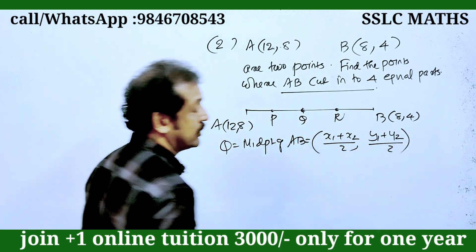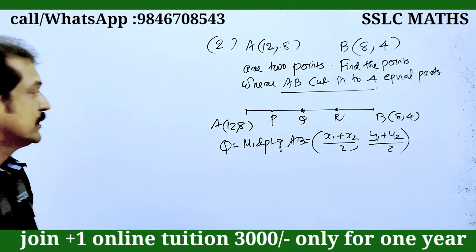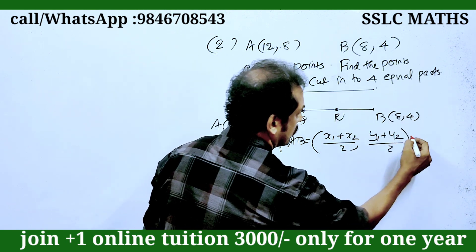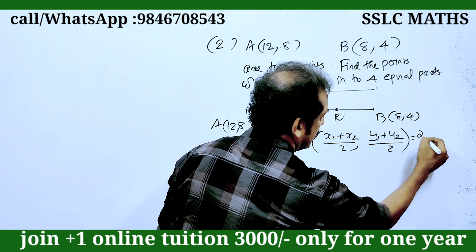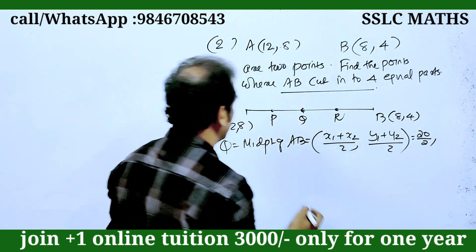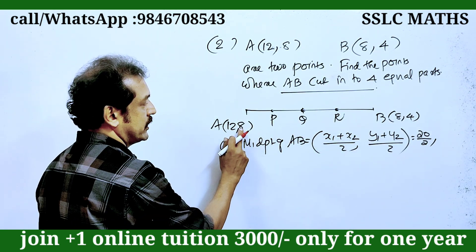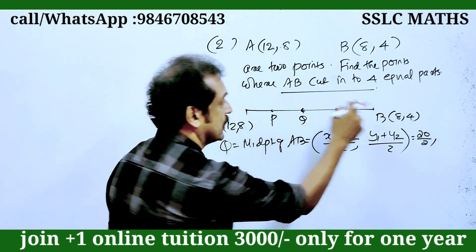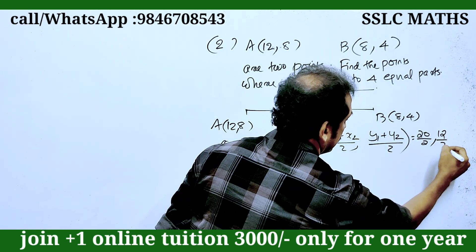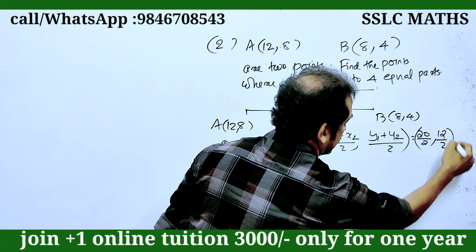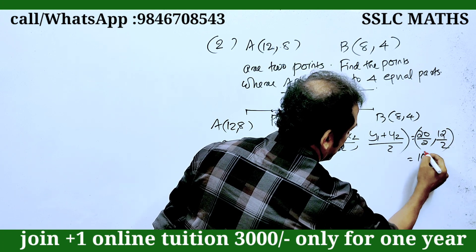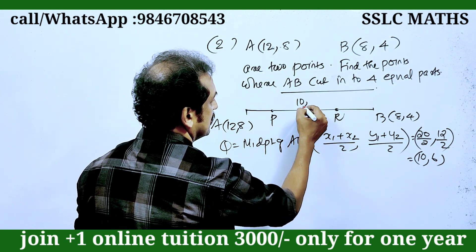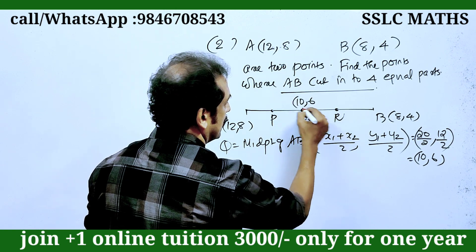Since we have 4 equal parts, the y coordinate is 8 by 2. 4 plus y gives 8 plus 4 equal parts, giving 12. The answer is 10 for R.